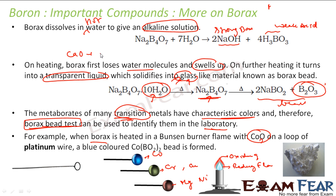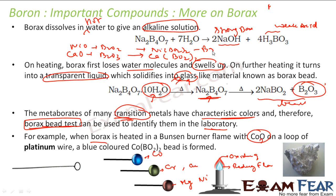For cobalt, the reaction in the oxidizing flame gives CoBO2 — that is cobalt metaborate — and this is blue color. For nickel, NiO added to B2O3 gives Ni(BO2)2, that is nickel metaborate, and this is brown color. For manganese, heating with B2O3 gives Mn(BO2)2, that is manganese metaborate, and this is also brown color.